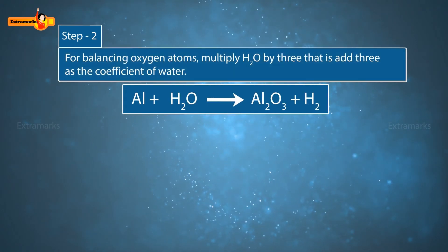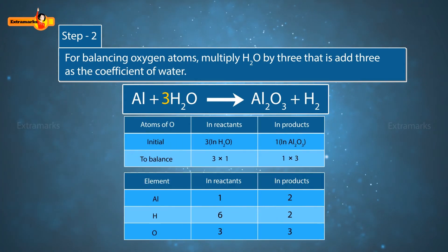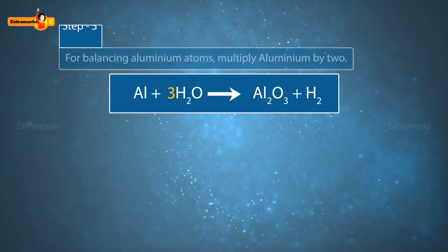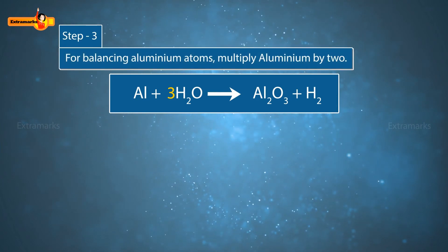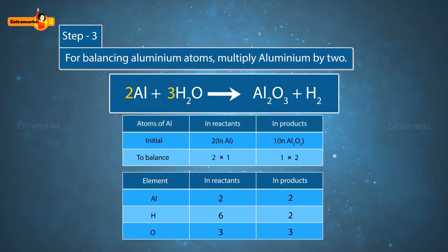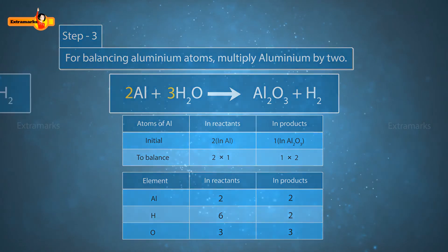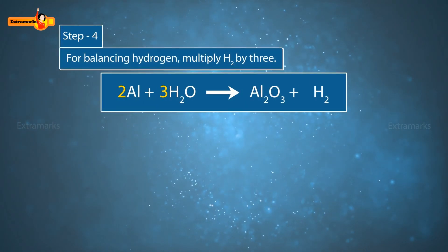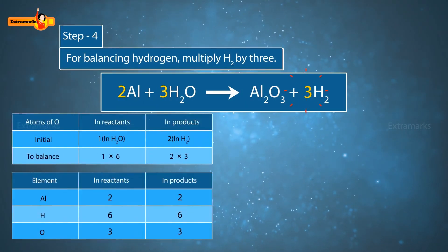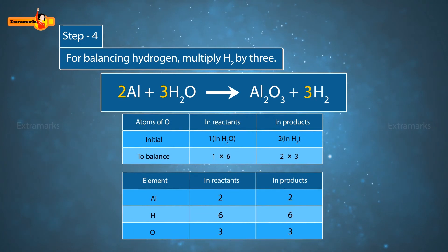For balancing oxygen atoms, multiply H2O by 3. That is, add 3 as the coefficient of water. For balancing aluminium atoms, multiply aluminium by 2. For balancing hydrogen, multiply H2 by 3. Remember, we have to write 3 only as the coefficient of H in H2.